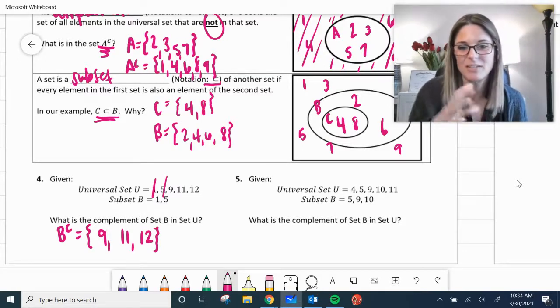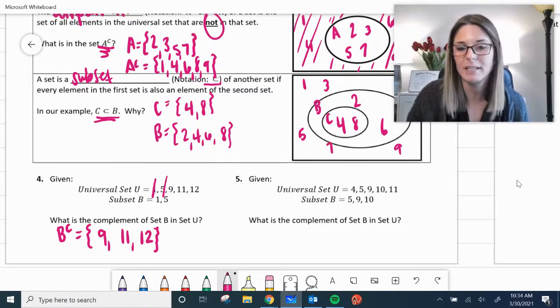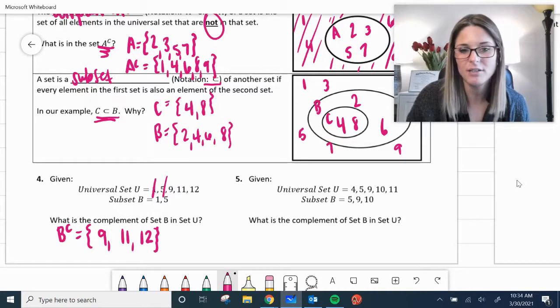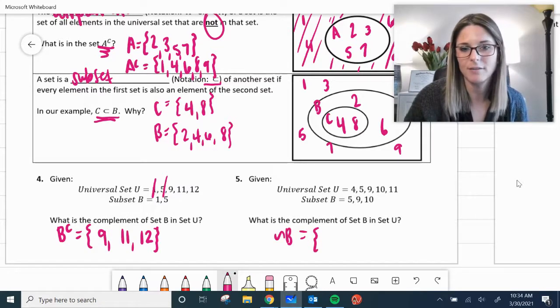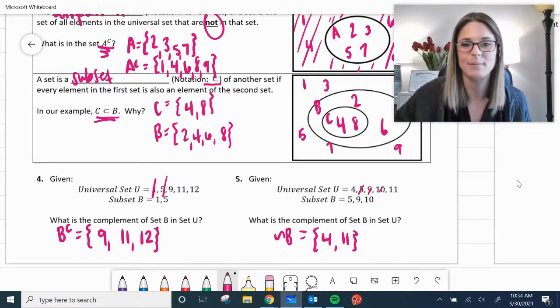Number five, universal set 4, 5, 9, 10, 11. Subset B, 5, 9, 10. What's the complement of B in set U? I want to use the other notation where it's got a tilde, a little squiggly, and then B, that also represents complement. So if it's got 5 and 9 and 10, then the complement's going to be 4 and 11. Everything that's not in subset B.